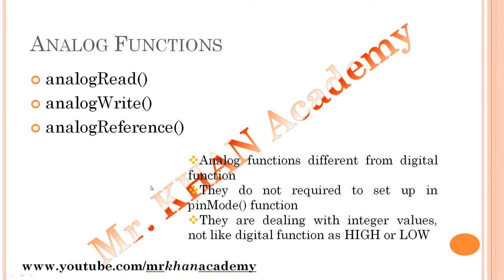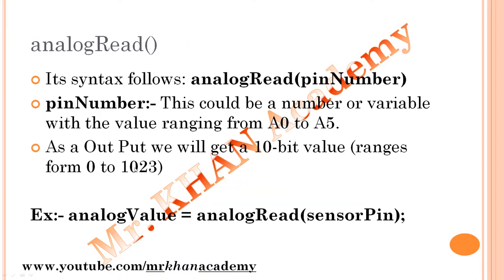If input is 10-bit, we get values from 0 to 1023; if 8-bit output, we get 0 to 255 — as we saw in the demonstration. Now, analogRead: the syntax is `analogRead(pin)`. The pin number is where the analog sensor is connected, and it can be a variable or a value ranging from A0 to A5. If using another board like Mega, the range can go up to A10 or A12. The output is a 10-bit value ranging from 0 to 1023. For example: `analogValue = analogRead(sensorPin)` — which we already used in our code — stores the photocell reading from A0 into the `analogValue` variable.